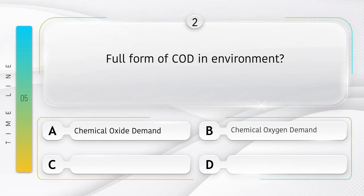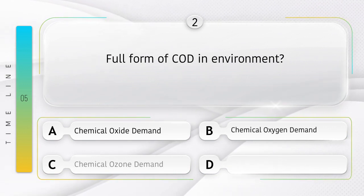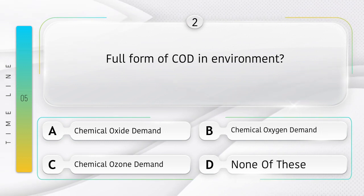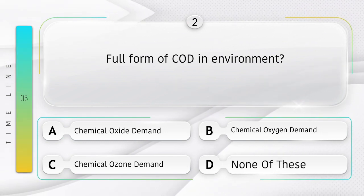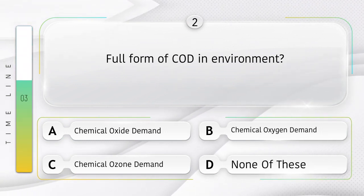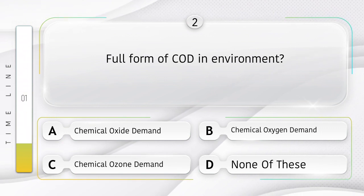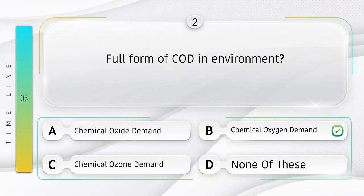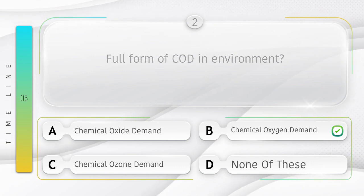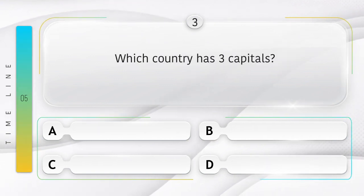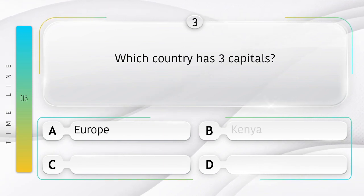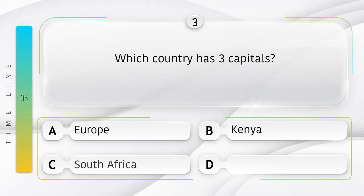Full form of COD in environment: option A: Chemical Oxide Demand, B: Chemical Oxygen Demand, C: Chemical Ozone Demand, D: None of these. Answer is option B, Chemical Oxygen Demand.